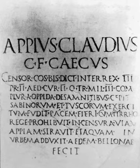Each vowel letter represents at least two phonemes: A can represent either short /a/ or long /aː/; E represents either /ɛ/ or /eː/; etc. Short mid-vowels E and O, and close vowels I and U, were pronounced with a different quality from their long counterparts, being also more open. This opening made the short vowels I and U similar in quality to long E and O respectively. I/E and U/O were often written in place of each other in inscriptions.